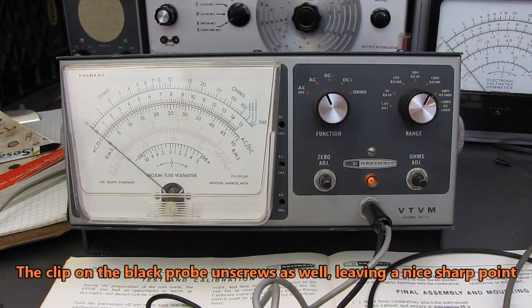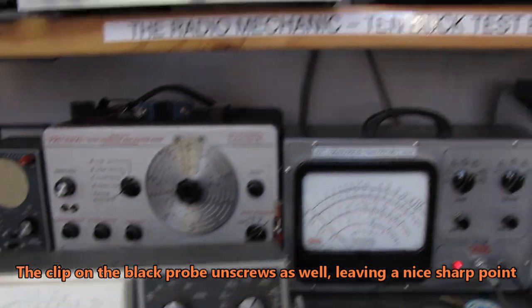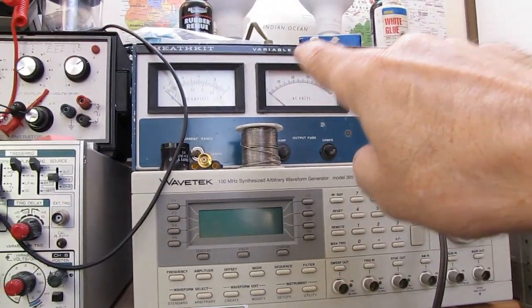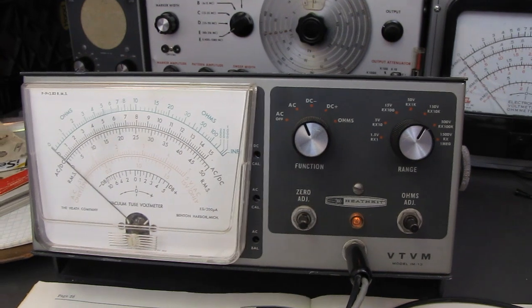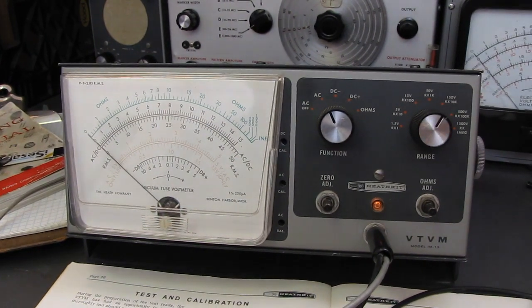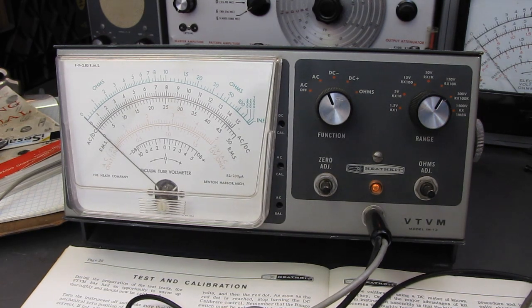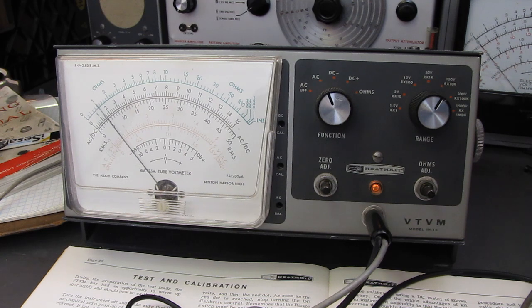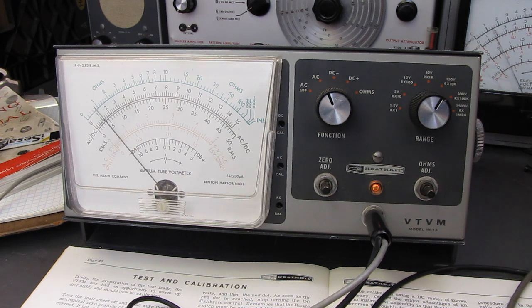You remember the alligator clip that was stuck on the front of the VTVM so that it wouldn't get lost. That's for this probe. I use it on here. I just press it on. It's a press fit and I've got an alligator clip that way. Okay, both probes are set on AC and I'm going to turn on my Heathkit. And if you want to see what that thing is. This is an isolation and variac. It's an isolation transformer and a variac.